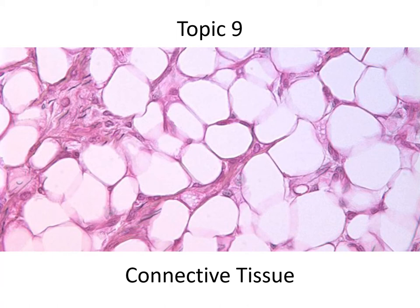Some connective tissues do have specialized functions, and you're seeing one of those right here. We've got adipose cells, or fat cells. They look like great big empty cells, but in fact they contain triglycerides — they fill up with triglycerides and store energy.